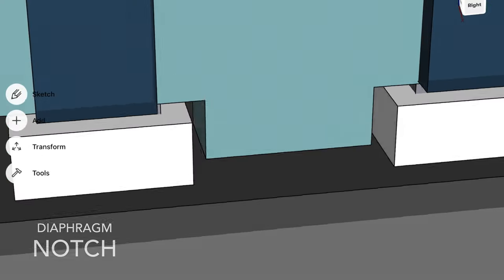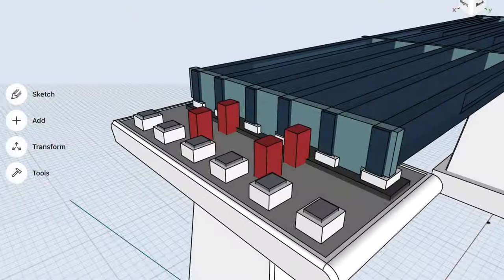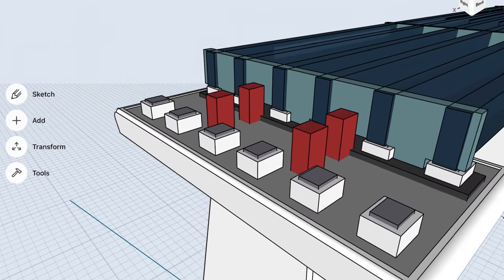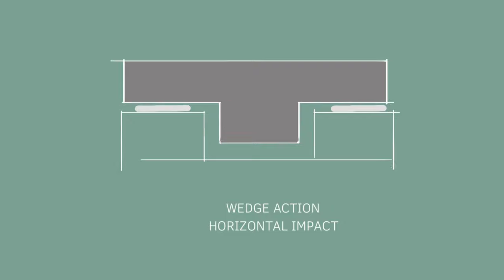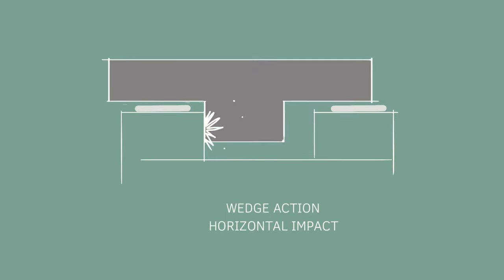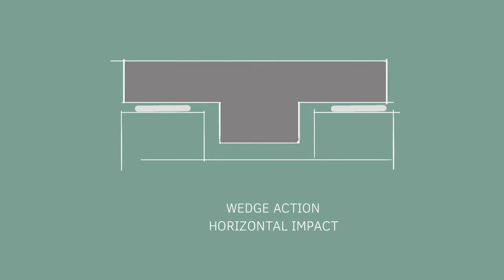As you observe, the diaphragm at the end is designed with a notch which is protruding downwards. This notch transfers the forces to the bearing pedestals on either sides. In this case, the bearing pedestals behave as transverse arrestors. This is how the notch impacts the pedestals.